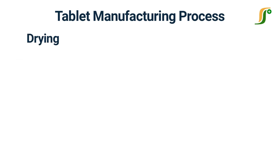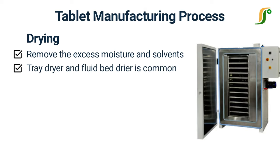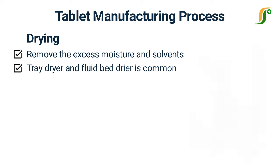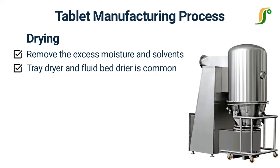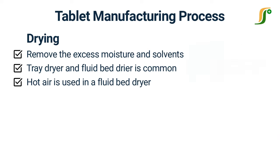Granules are dried to remove the excess moisture and solvents used in the granulation process. There are different methods used for drying, but tray dryer and fluid bed dryer are commonly used. In pharmaceutical manufacturing, fluid bed dryers are widely used. Hot air is used in a fluid bed dryer to dry the material. It has a perforated bowl to place the material, and hot air is passed through the material to remove the moisture and solvents.